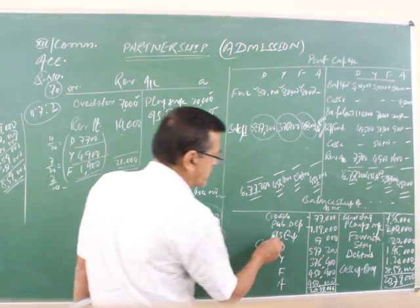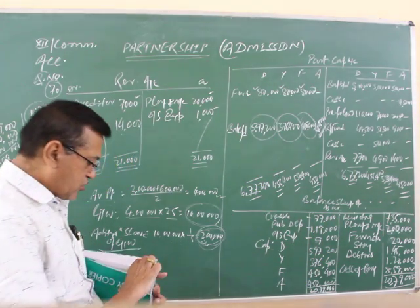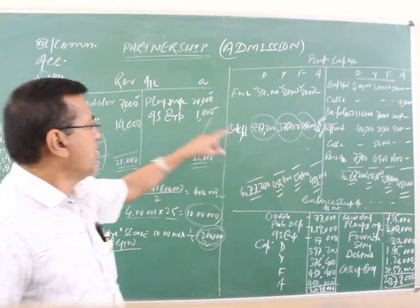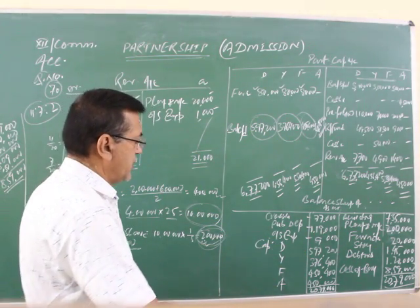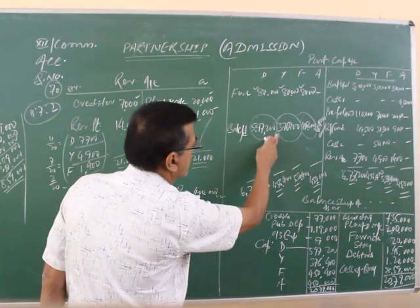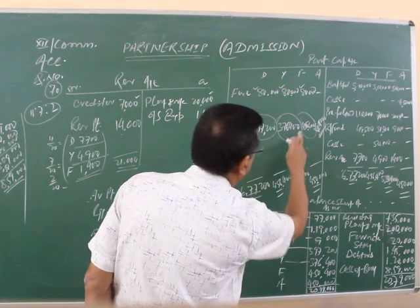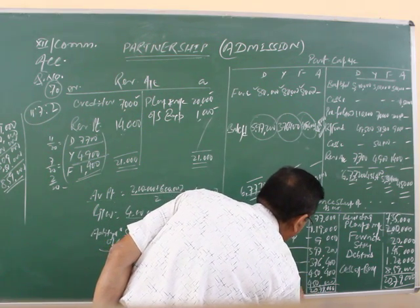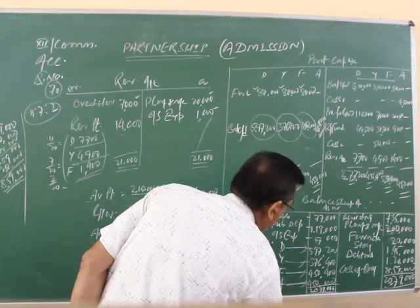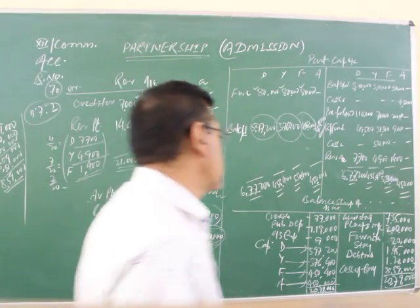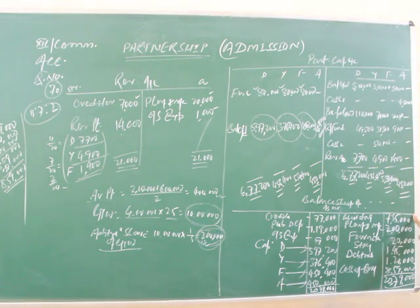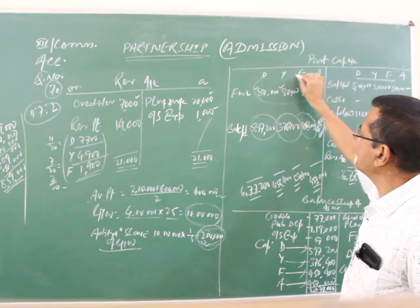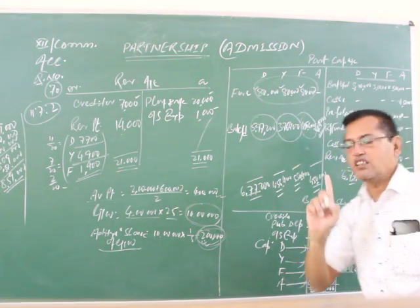And after this closing balance of the partners capital: 5,97,700, 3,67,400, 86,400, and Adit 4,50,000. This is the partners capital. On this side bank remains the same, there is no any change. Plant and machinery increased by 20,000, so plant and machinery you have to write two lakhs.